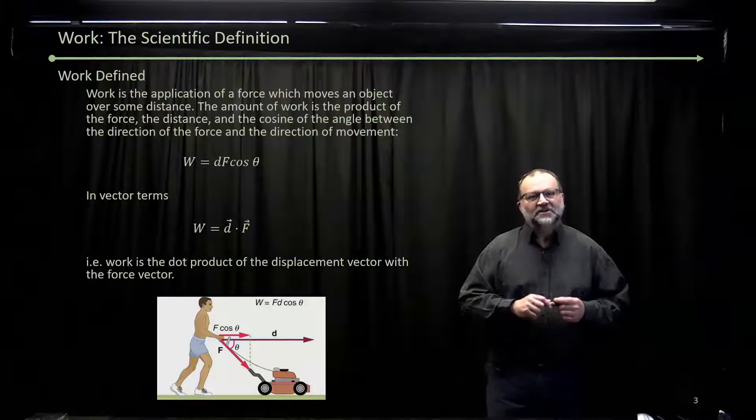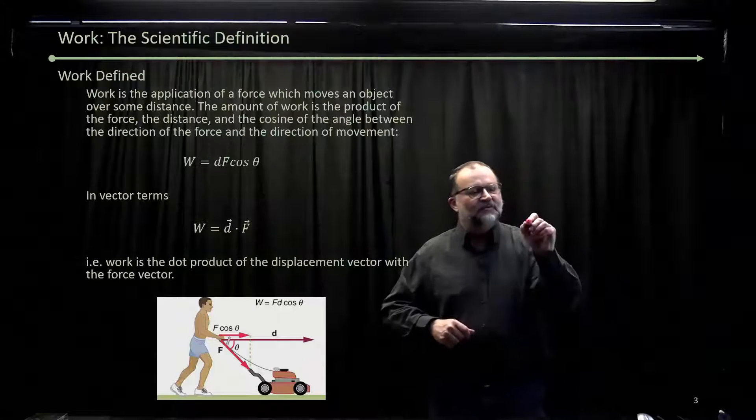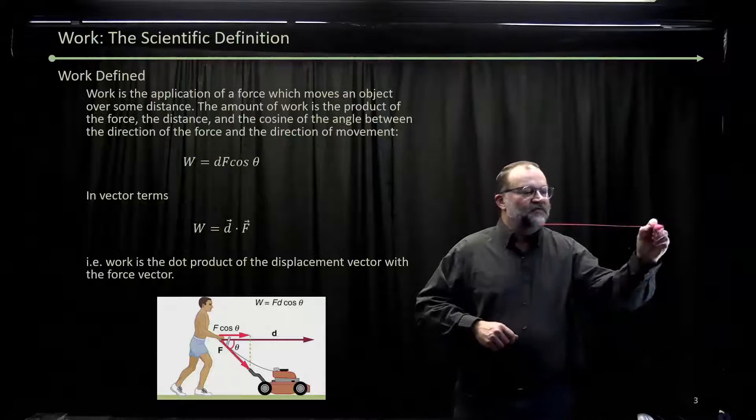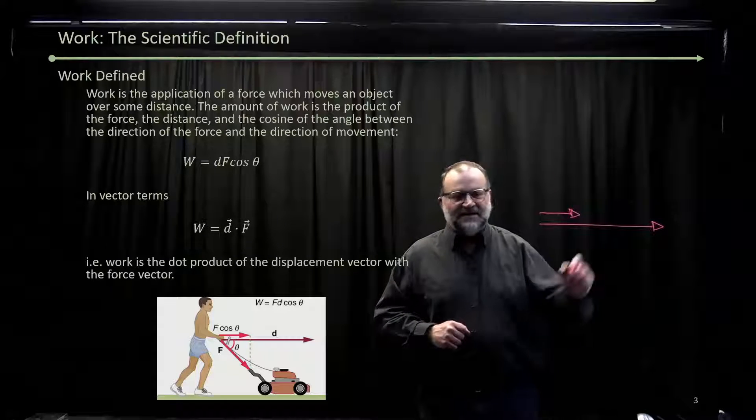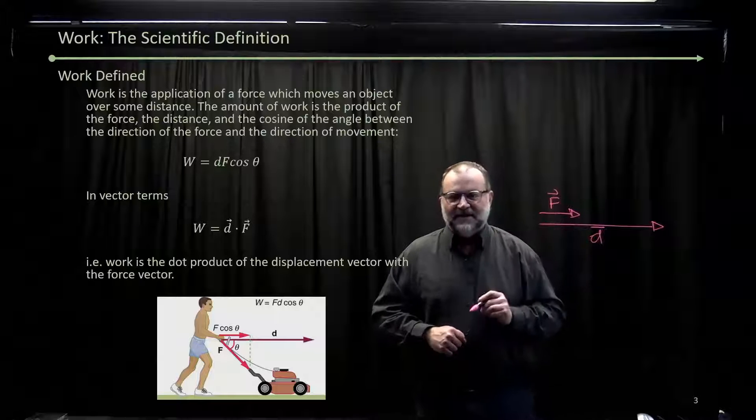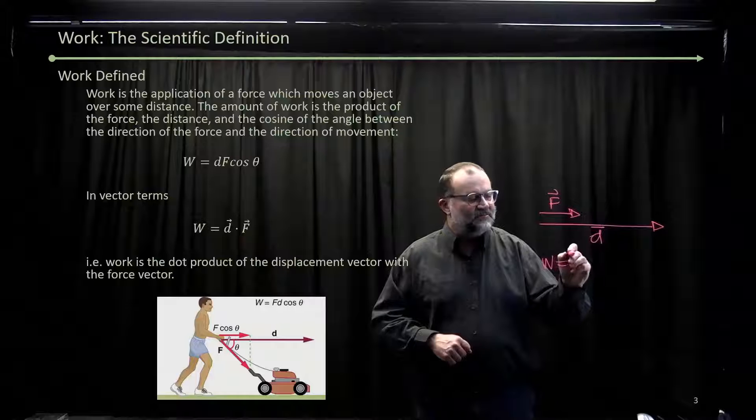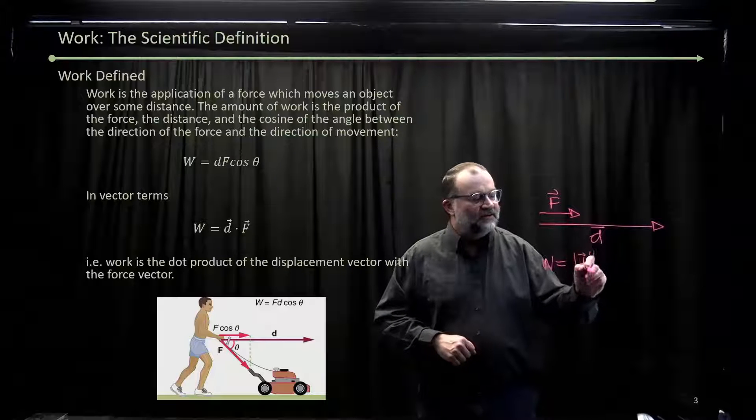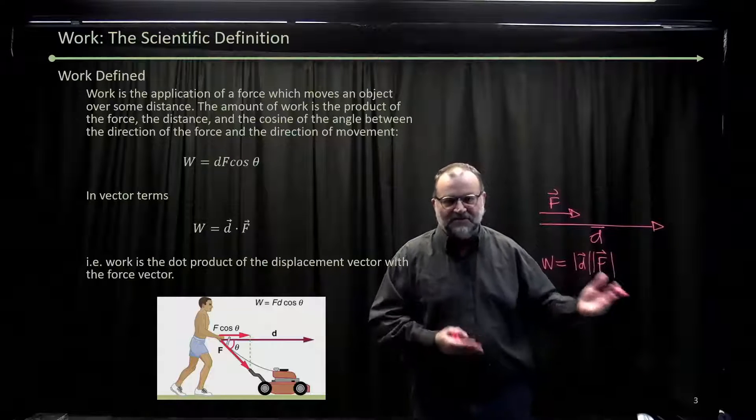Work is force applied through a distance. If you're moving in some direction, if you get something moving in a particular direction, and the force is in that direction—we'll make these both vectors—then the work done in moving something is just the magnitude of the force times the magnitude of the distance, or the force times the distance.